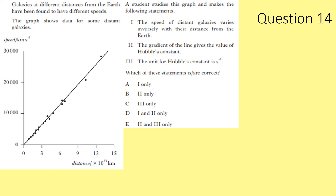Question 14. This is our Hubble graph showing galaxy speed versus distance. Statement 1 — speed varies inversely with distance — is false; speed increases with distance. Statement 2 — gradient gives Hubble's constant — is true. Statement 3 — unit of Hubble's constant is s⁻¹ — is true. Answer: statements 2 and 3 only.